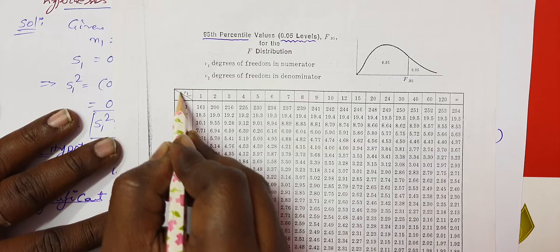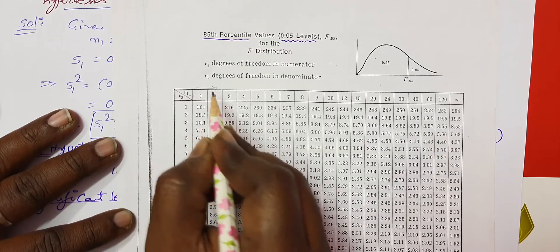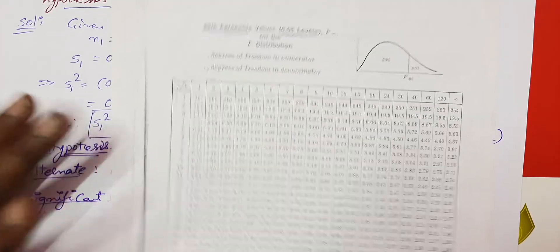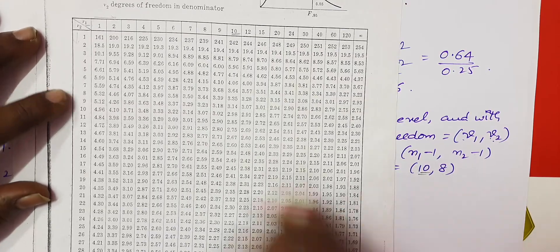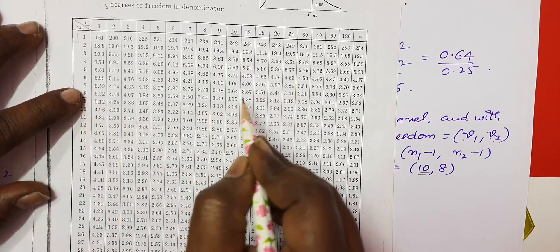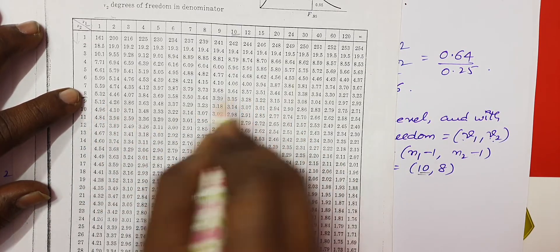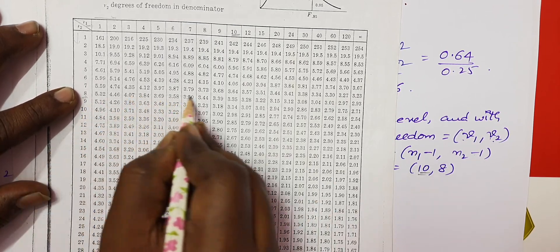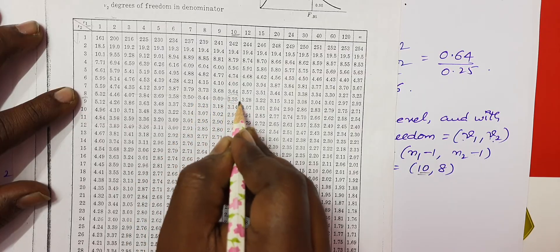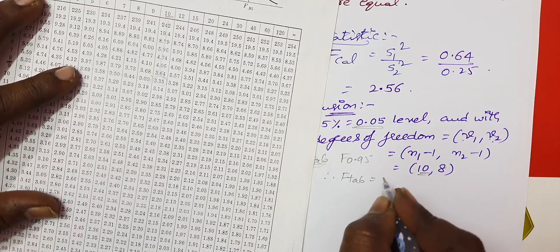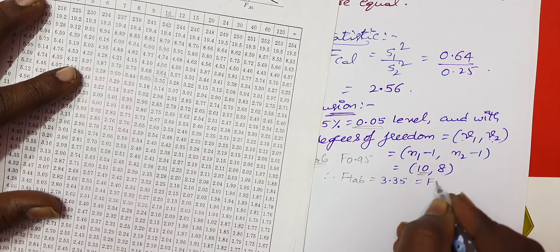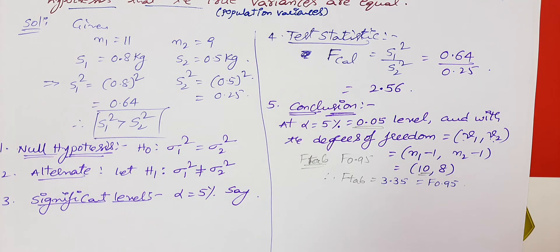In the F distribution table, nu1 goes row-wise and nu2 goes column-wise. With nu1 equal to 10 and nu2 equal to 8, we find the row for 10 and the column for 8. Where these two values coincide, the table value is 3.35. So the F table value is 3.35.